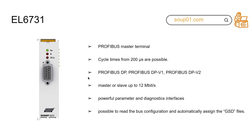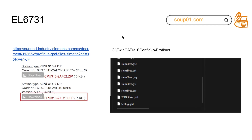The EL6731 is a Profibus master terminal. The cycle time is from 200 milliseconds and it supports Profibus DP, DPV1, and DPV2 for master or slave at up to 12 megabits per second. It also has powerful diagnostic parameters and a diagnostics interface, and it's possible to read the bus configuration and automatically assign the GSD files. Profibus is very similar to Profibus — you add a GSD or GSD-ML file.